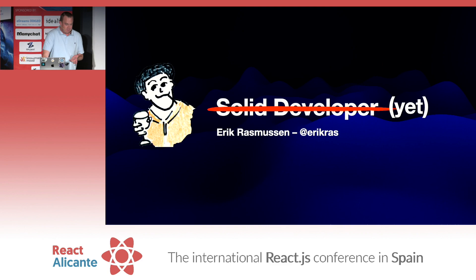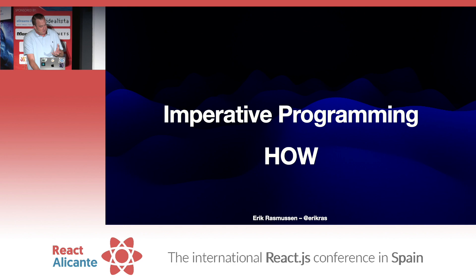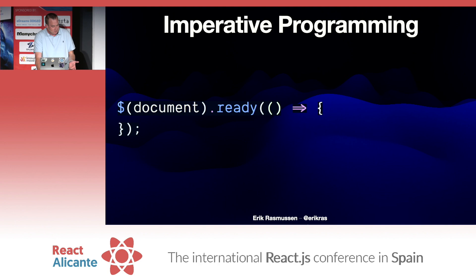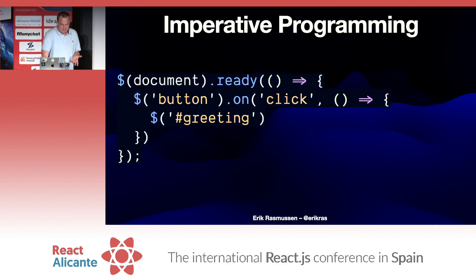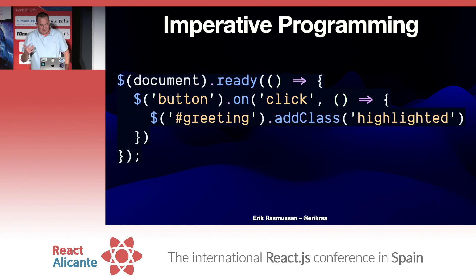Let's go back to computer science class and talk about some terminology. Imperative programming is where you tell the computer how to accomplish a task. Back in the jQuery days, for example, you would say: when the document is ready, find the button, register a click listener, and when that button is clicked, find the element with the ID greeting and add the highlighted class to it. And if you wanted to remove that class on the next click, you had to write all that out. It was exhausting.